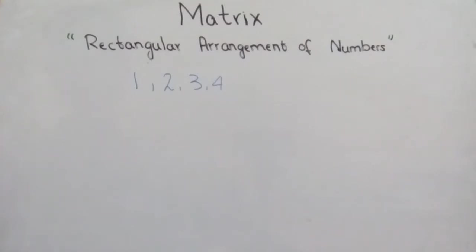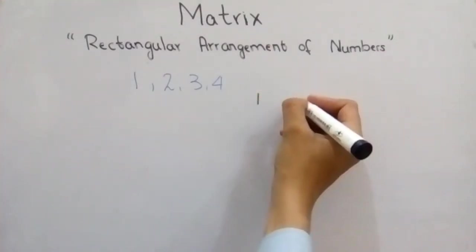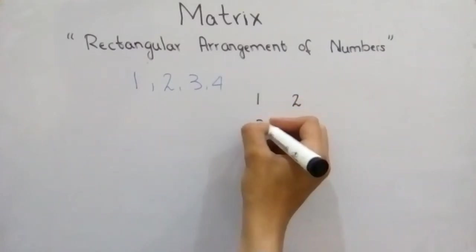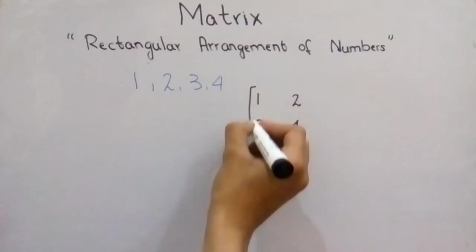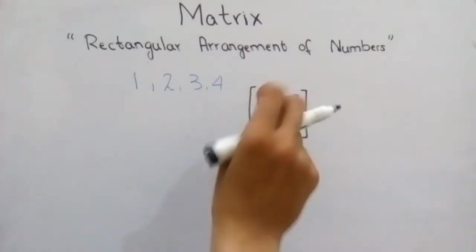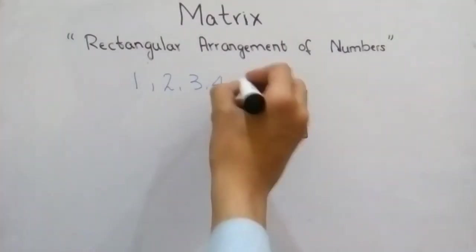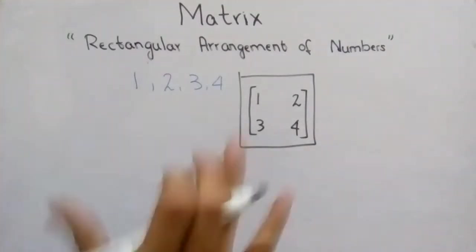For arranging this, we will write 1, 2, 3, 4 and enclose it in a shape like a rectangle. We will enclose it by square brackets. When we enclose these numbers by square brackets, they form a rectangle. This actually forms a square, but a square is also a rectangle.